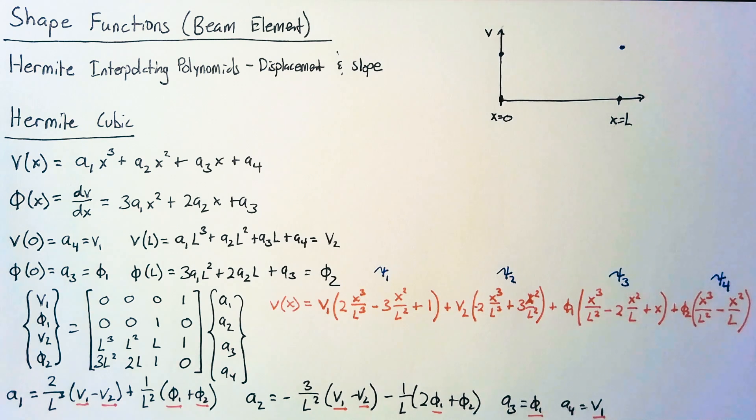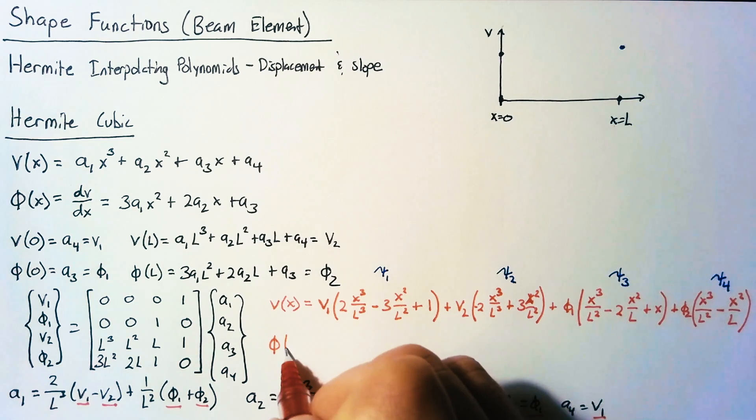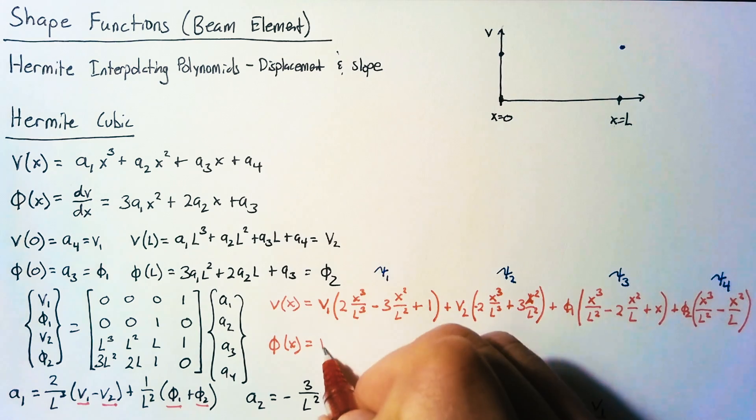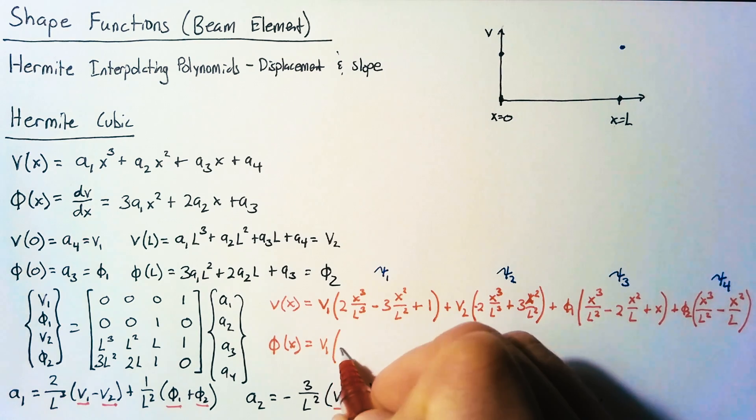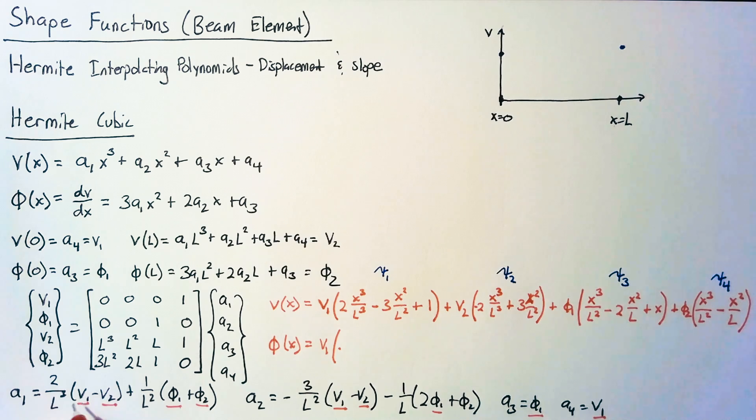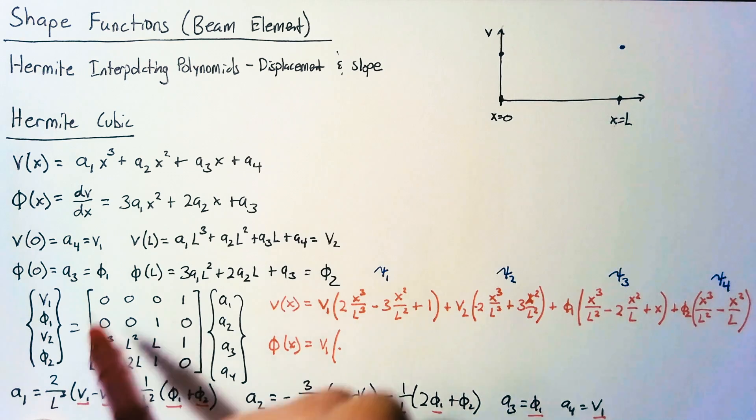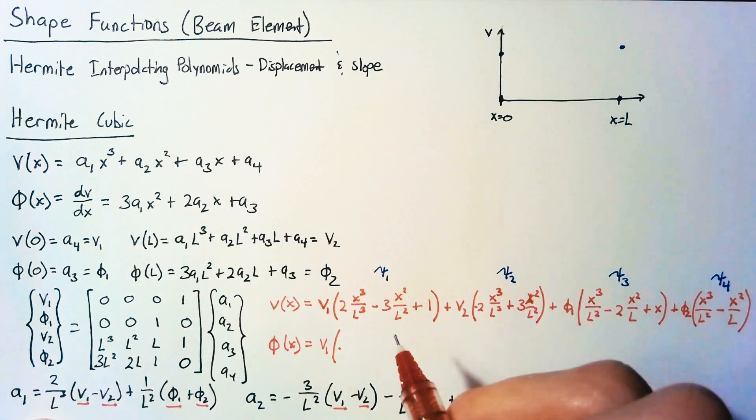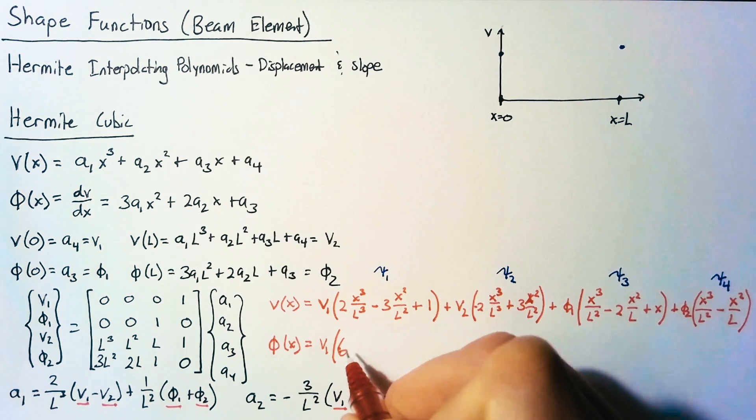To investigate fully, let's also write out our equation for phi of x. So in this case, we have v1 multiplied by 2 over l cubed multiplied by 3x squared. So we get a 6x squared over l cubed.